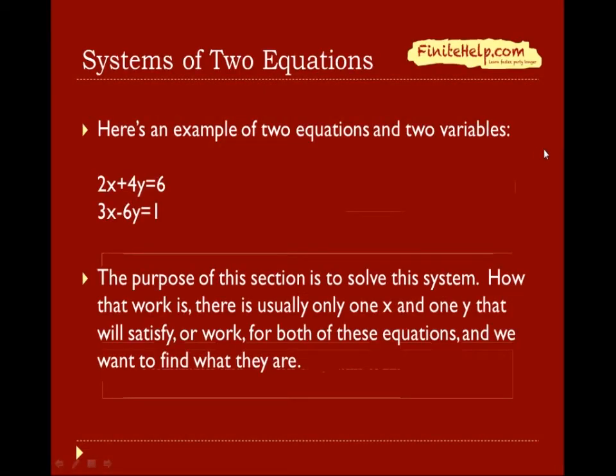In this section, we're going to learn about having a system of two equations with two variables. Here's an example of one. We're going to learn how to solve the system. How that works is that since there are two equations and two variables, there's usually only one x and one y that when you put it in both of these equations, they will both work out. And we're trying to find what they are.